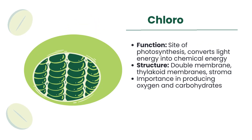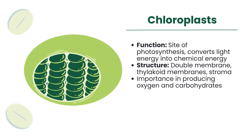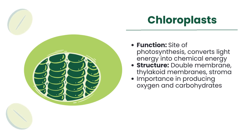In plant cells, chloroplasts are the sites of photosynthesis, converting light energy into chemical energy. They play a crucial role in producing oxygen and carbohydrates, essential for sustaining life on Earth.